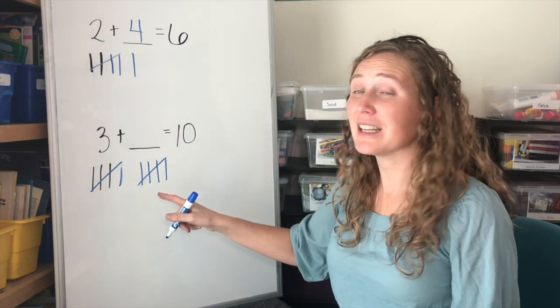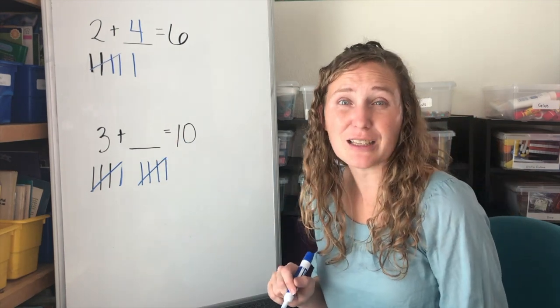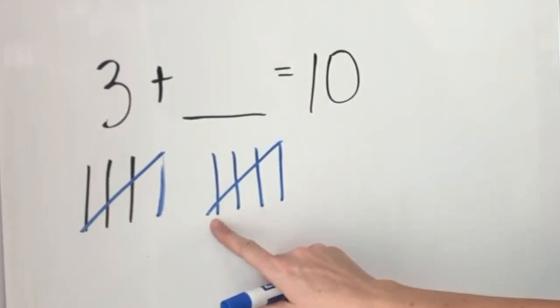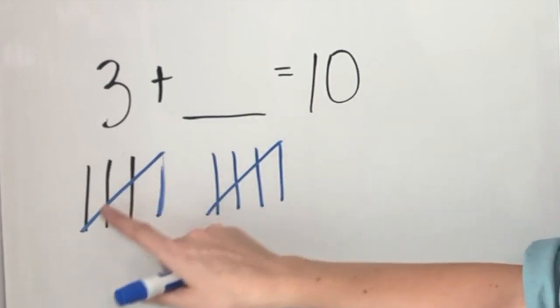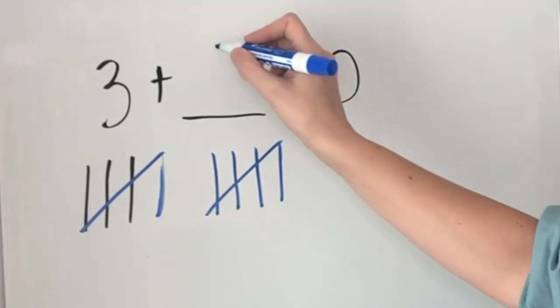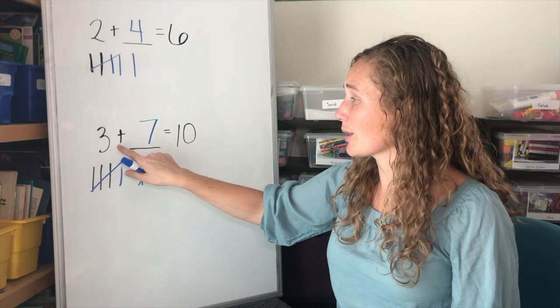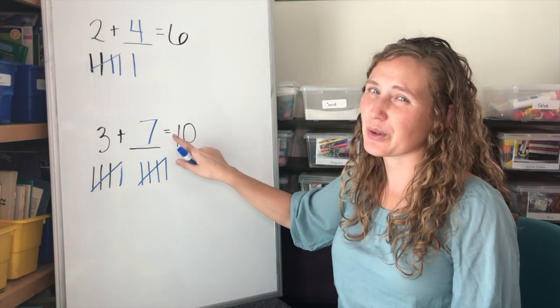Our missing number is how many tallies we have in blue. Let's count them. We have five all blue here. Six, seven. Seven blue tallies means our missing number is seven. Three plus seven equals ten.